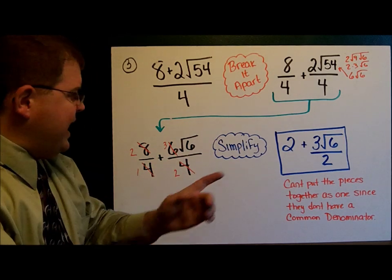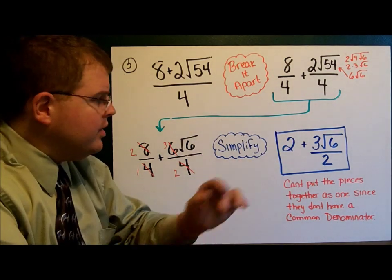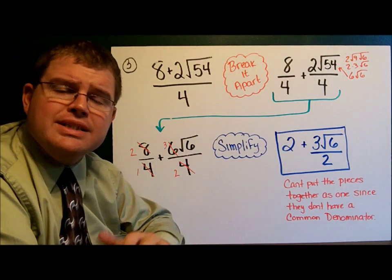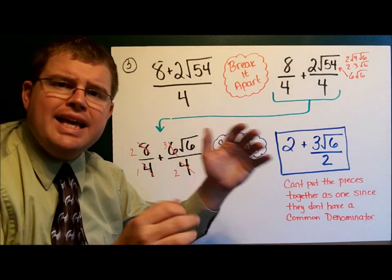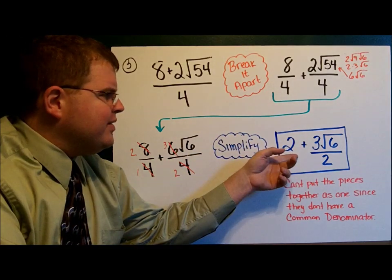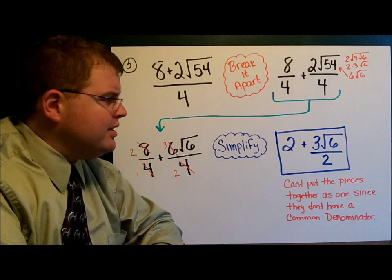So what do I have? 2 plus 3 square roots of 6 over 2. Now I do not have common denominators here. Because I don't have common denominators, I can't push the things back together in one piece. And so I simply leave it 2 plus 3 square roots of 6 divided by 2.